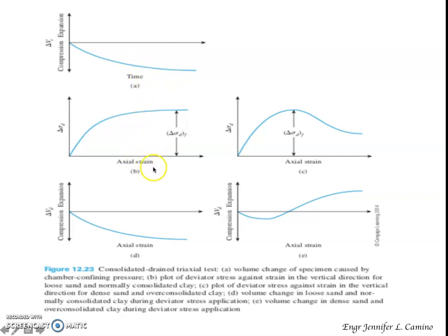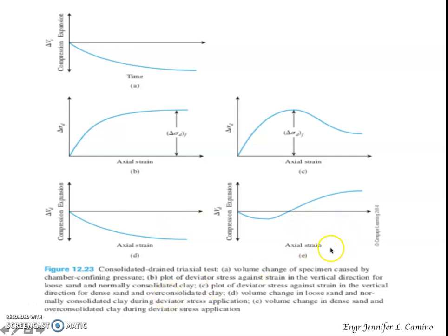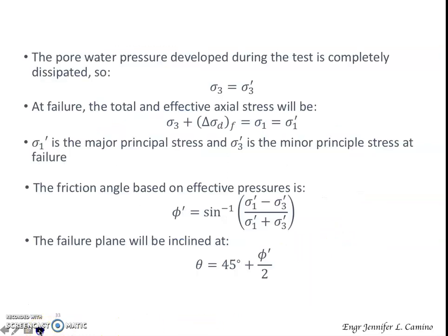The figures shown illustrate: the volume change of the specimen caused by chamber confining pressure; a plot of deviator stress against vertical strain for loose sand and normally consolidated clay; deviator stress against vertical strain for dense sand and over-consolidated clay; volume change in loose sand and normally consolidated clay during deviator stress application; and volume change in dense sand and over-consolidated clay during deviator stress application. The pore water pressure developed during the test is completely dissipated, so the total minor principal stress sigma sub 3 equals the effective minor principal stress sigma prime 3.